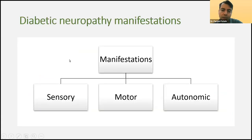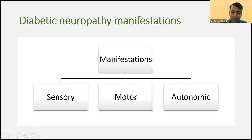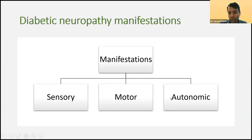For diabetic neuropathy, the clinical manifestations are categorized in three categories: sensory, motor, and autonomic manifestations. Sometimes they present together, or motor symptoms may present sooner, or sensory symptoms may be present sooner. Usually they may not present simultaneously.